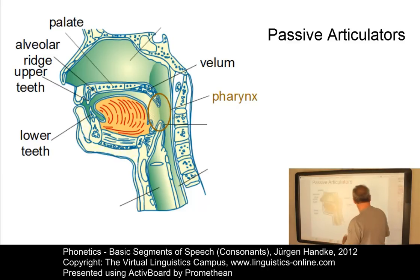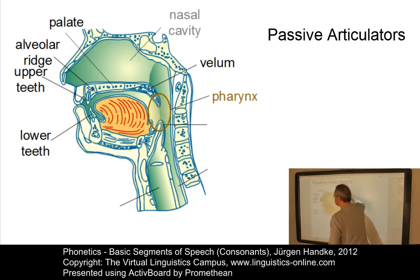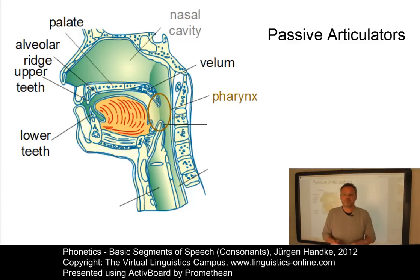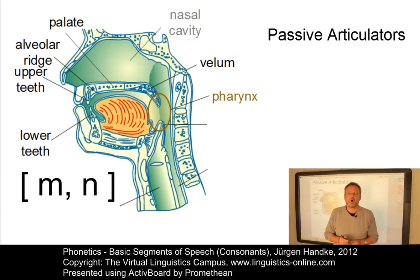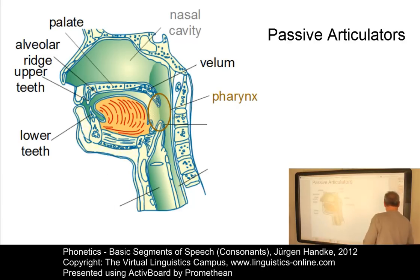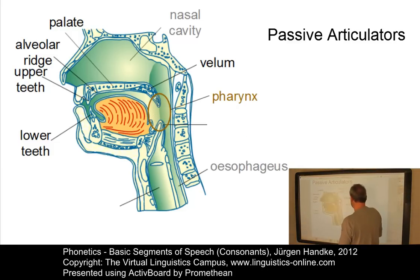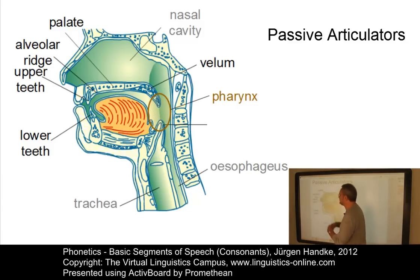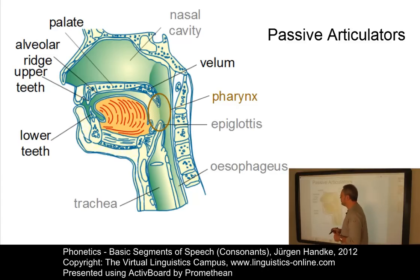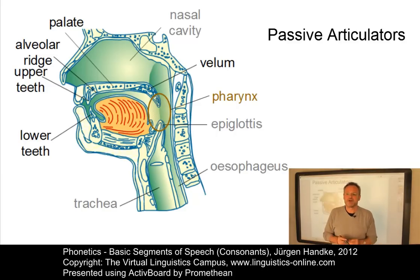Further areas which are not really articulators include the nasal cavity, which is the main non-oral resonance chamber. Consonants that involve the nasal cavity are typically M or N. In the back of the mouth, we find the food pipe or esophagus. The trachea or windpipe is used for breathing and for the airstream. And finally, we have the epiglottis, which is attached to the anterior part of the thyroid cartilage and functions as a closure to the entrance to the larynx during swallowing.